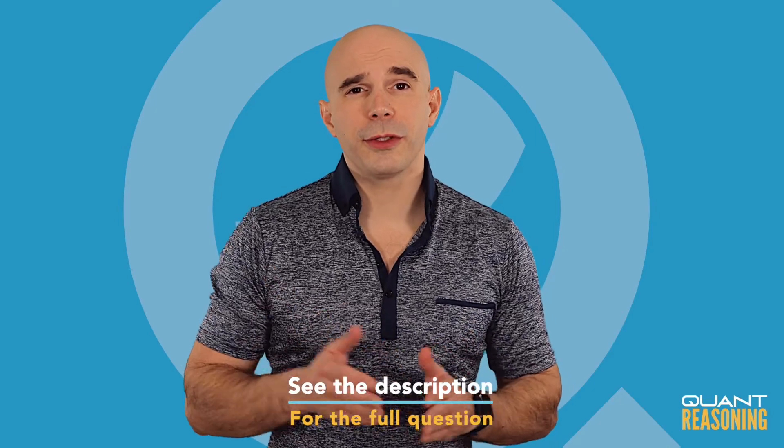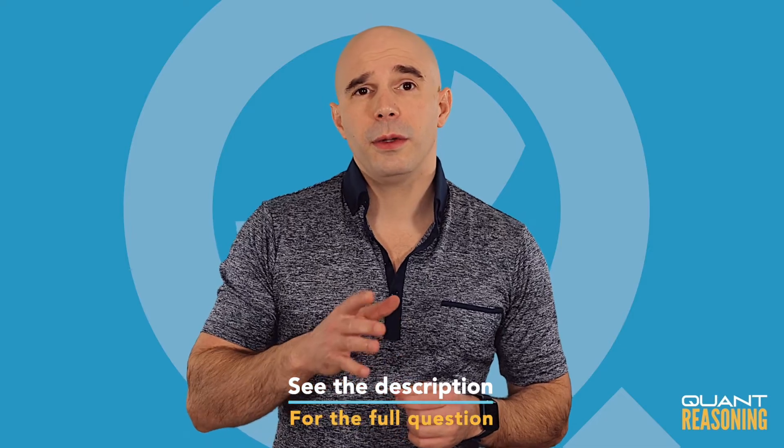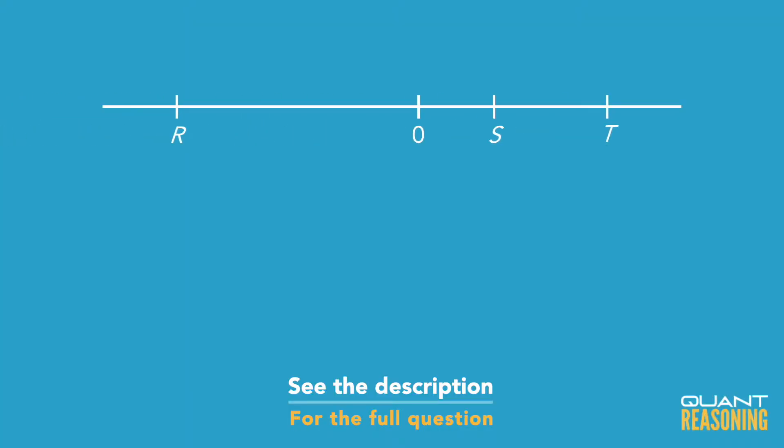We can see from the picture provided that r is to the left of 0, but s and t are both to the right of 0.